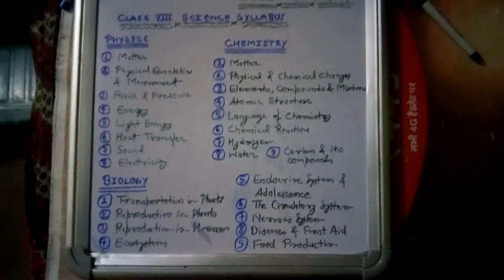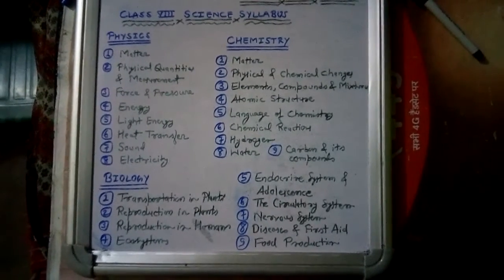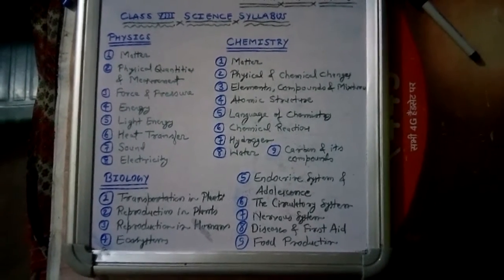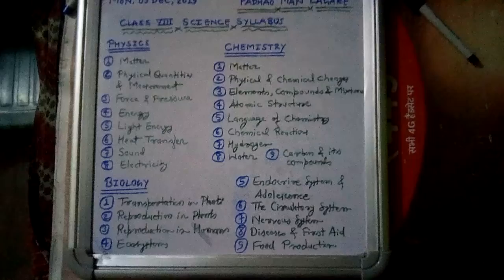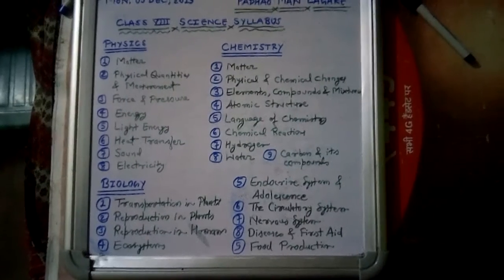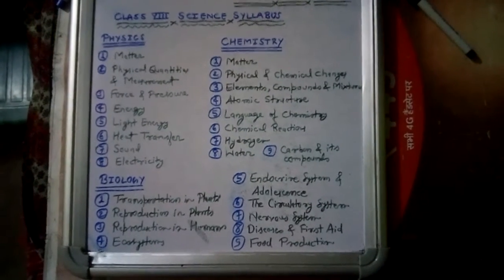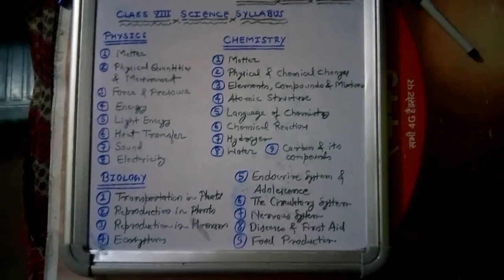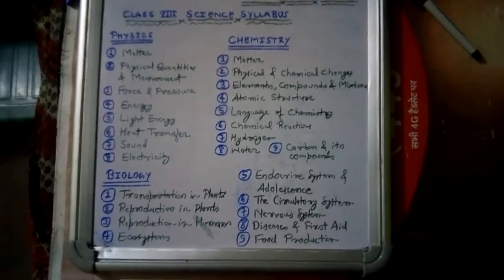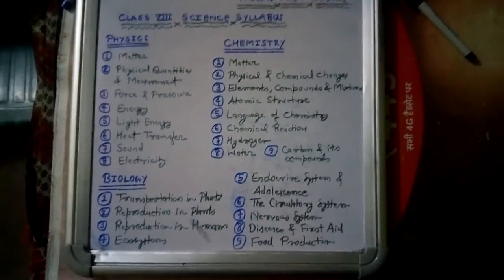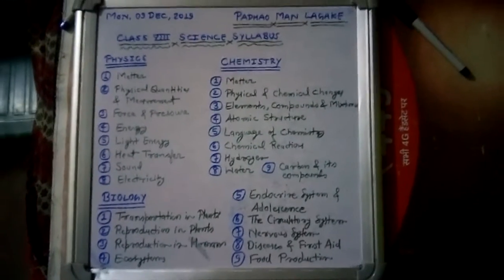In physics, Chapter 2: Physical Quantities and Measurement, Chapter 5: Light Energy, and Chapter 8: Electricity — these three chapters are very important for our future and for higher studies.